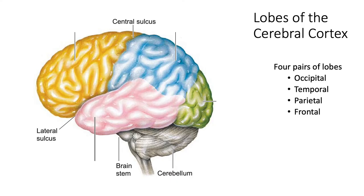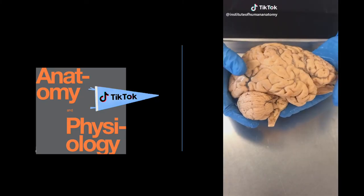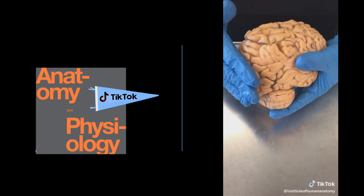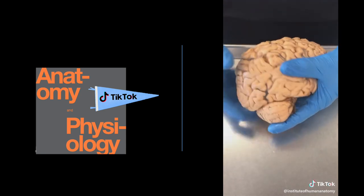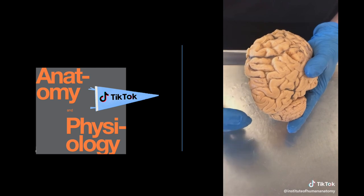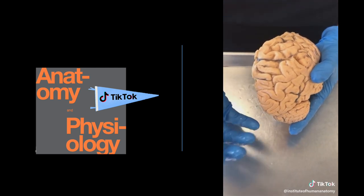There are four lobes of the cerebral cortex, split up by deep folds called sulci — singular: sulcus. First, the occipital lobe at the very back houses the visual cortex, your visual processing centers. The occipital lobe is located at the back of your head and its job is to process visual impulses. You can see blood vessels on the superficial part of the brain and the cerebellum below it.